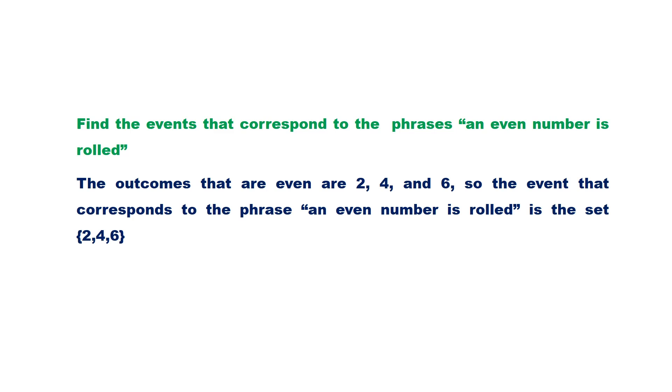An event is a subset of the sample space. In rolling a dice, the outcomes that are even are 2, 4, and 6. So the event that corresponds to the phrase 'an even number is rolled' is the set {2, 4, 6}.